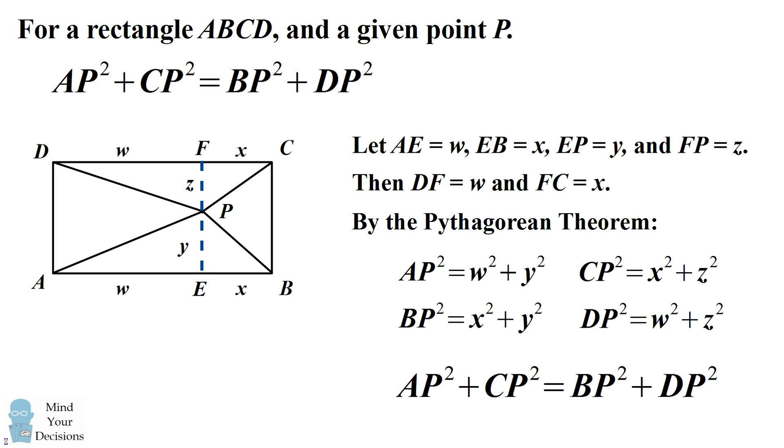Now if you add up the variables correctly, it is obvious that AP squared plus CP squared is equal to BP squared plus DP squared, because both of them will be equal to X squared plus Y squared plus W squared plus Z squared. Thus we've proven the British flag theorem.